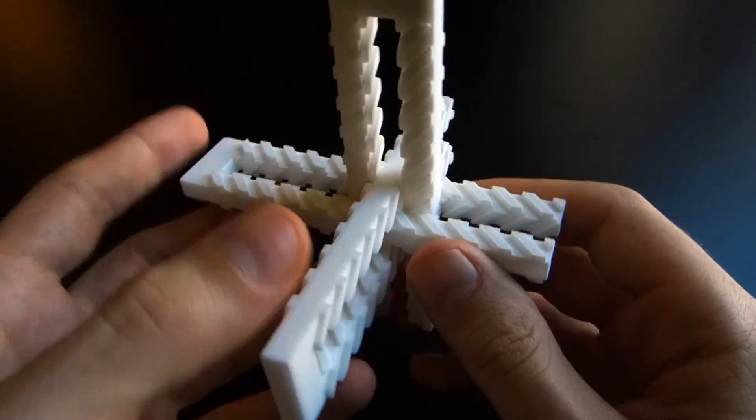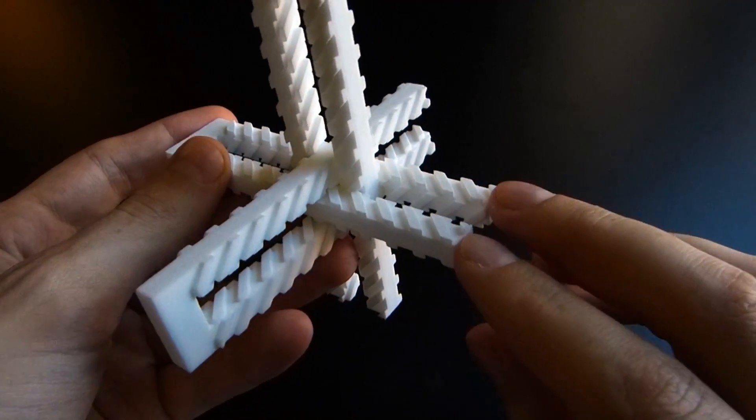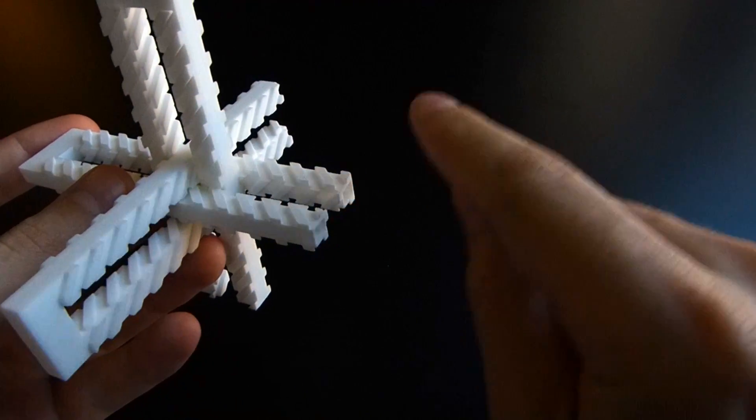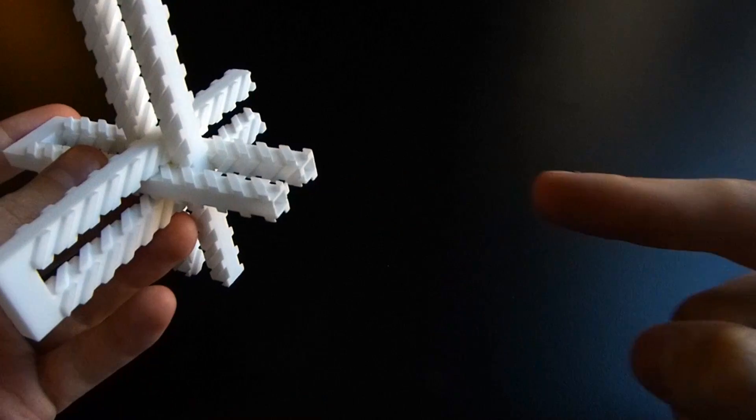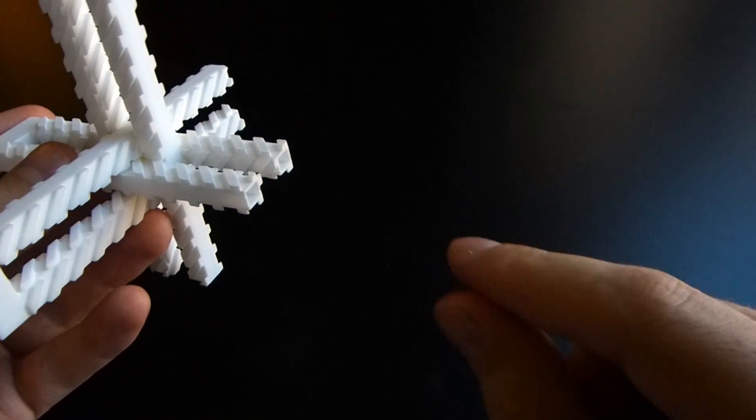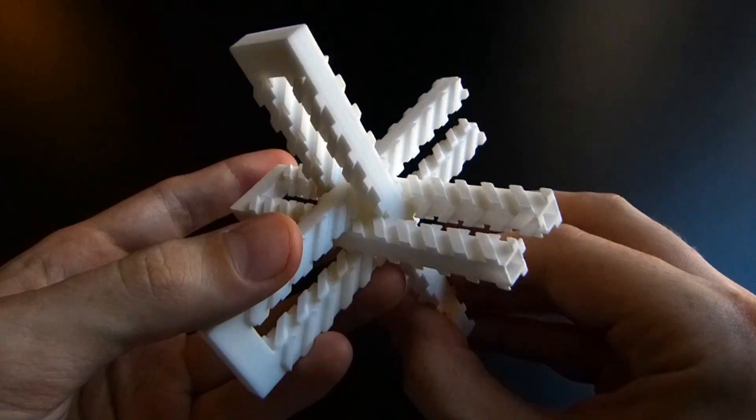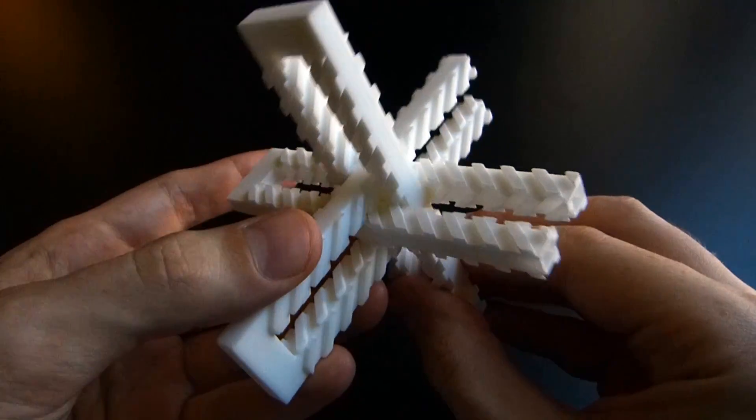And so the gear teeth, well, these are sort of like racks. So a rack and pinion mechanism is where you have an ordinary round gear and it's moving against a rack, a linear piece that has gear teeth on it. And so these are really racks rather than gears in the usual sense.